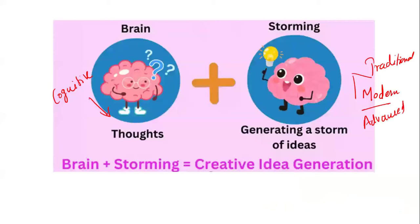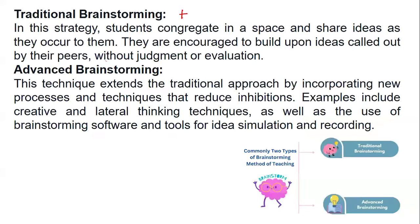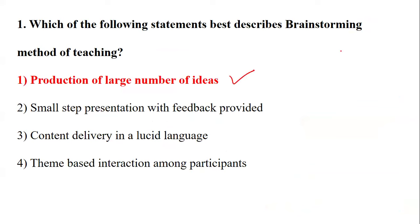Coming back to the question: brainstorming is about ideas. Looking at all the options, there is only one option that talks about the production of ideas — the rest talk about presentation, content delivery, or theme-based interaction. So the right answer is 'production of a large number of ideas.' This scores you two marks. Keep updating your scores.